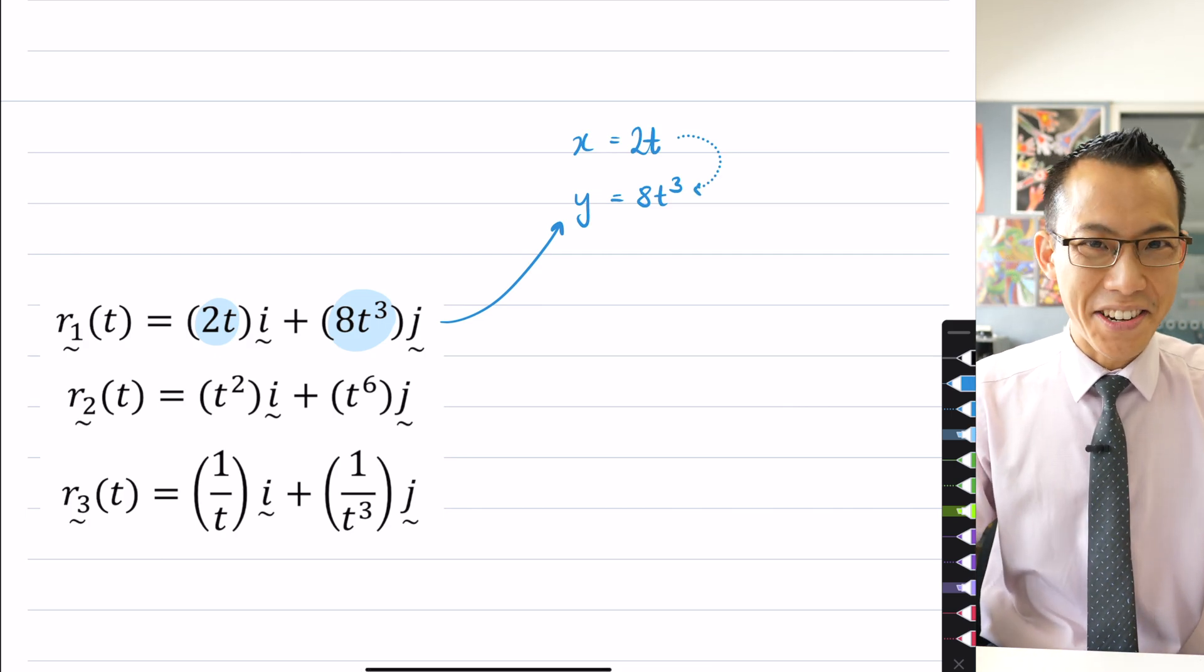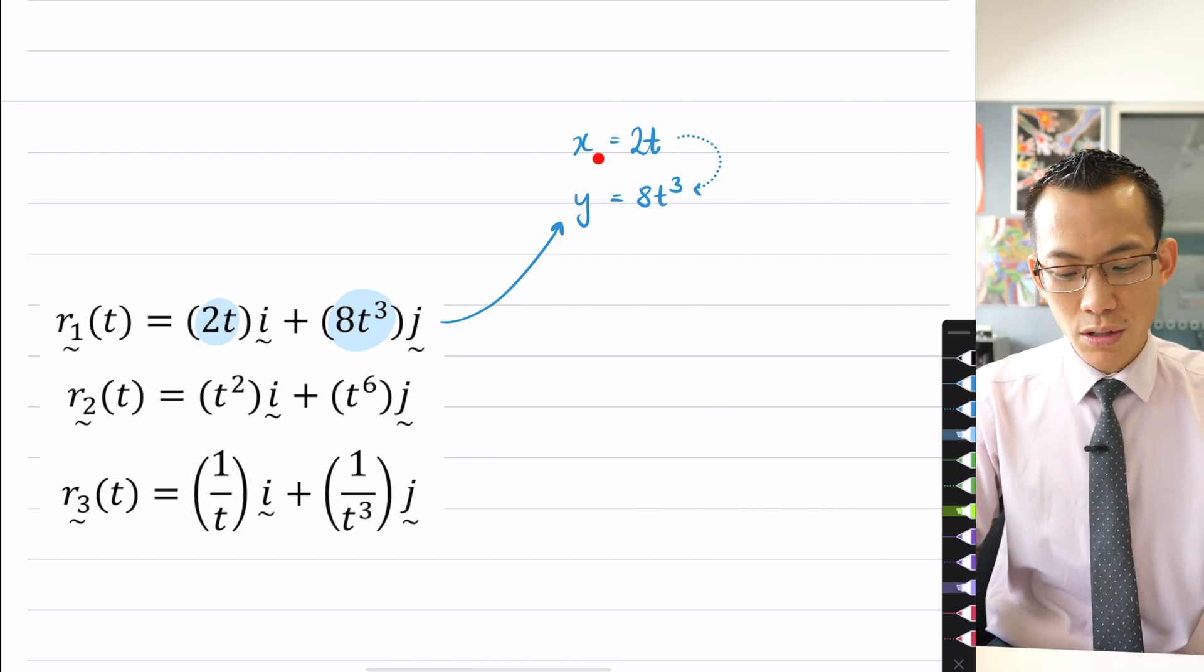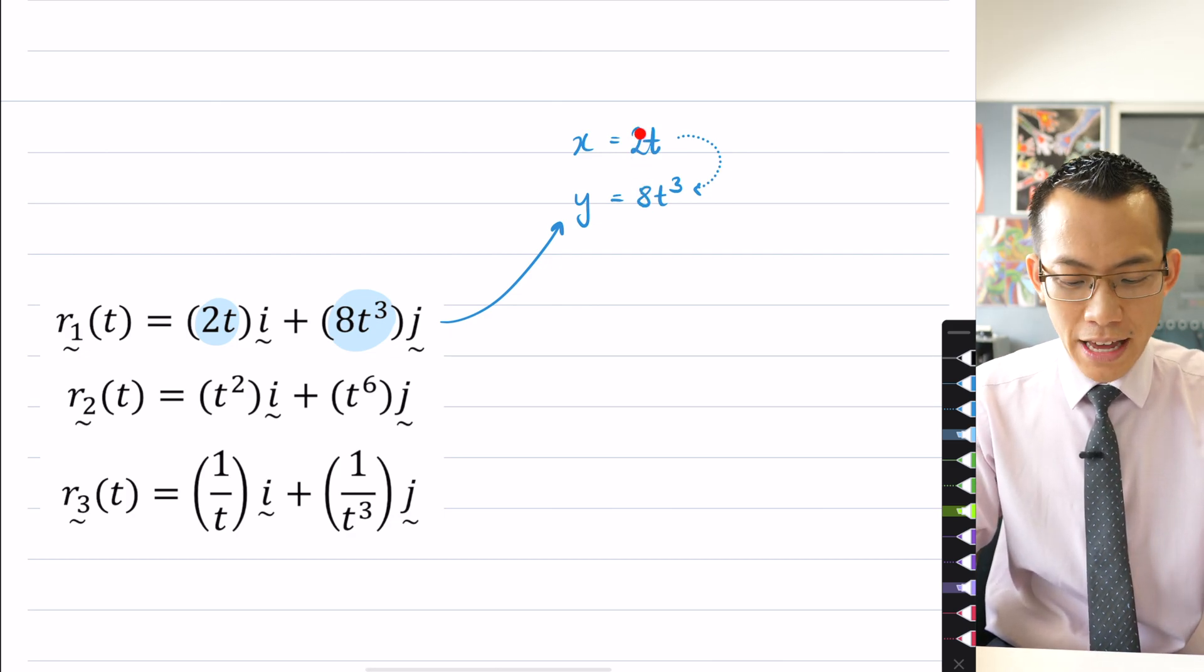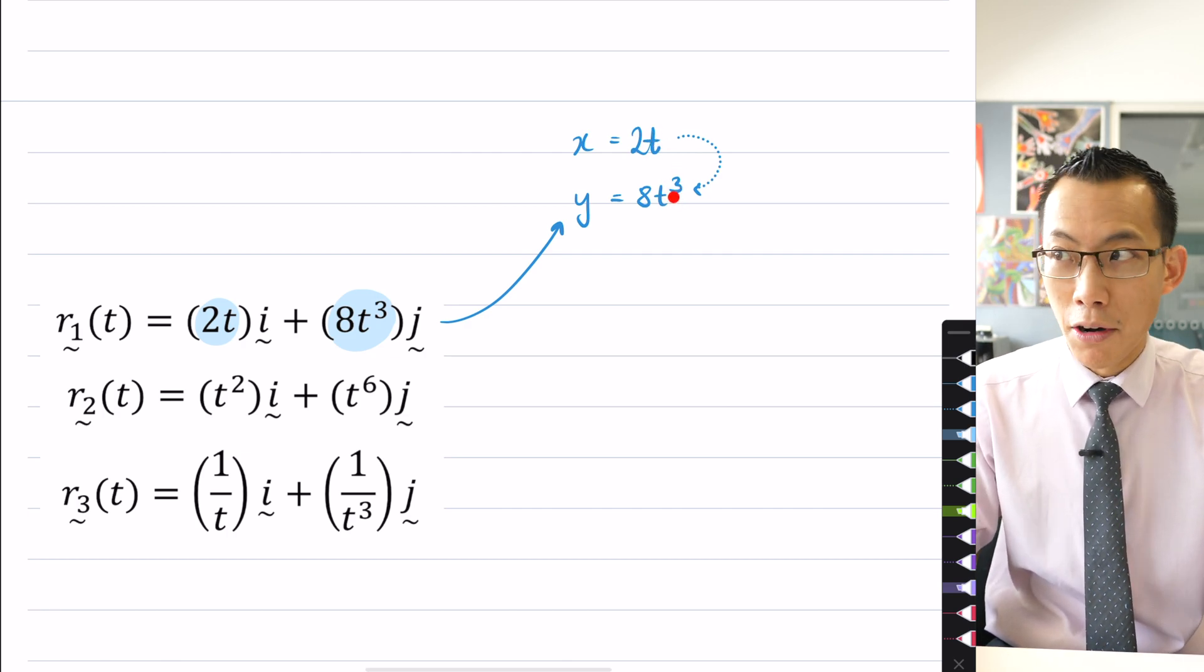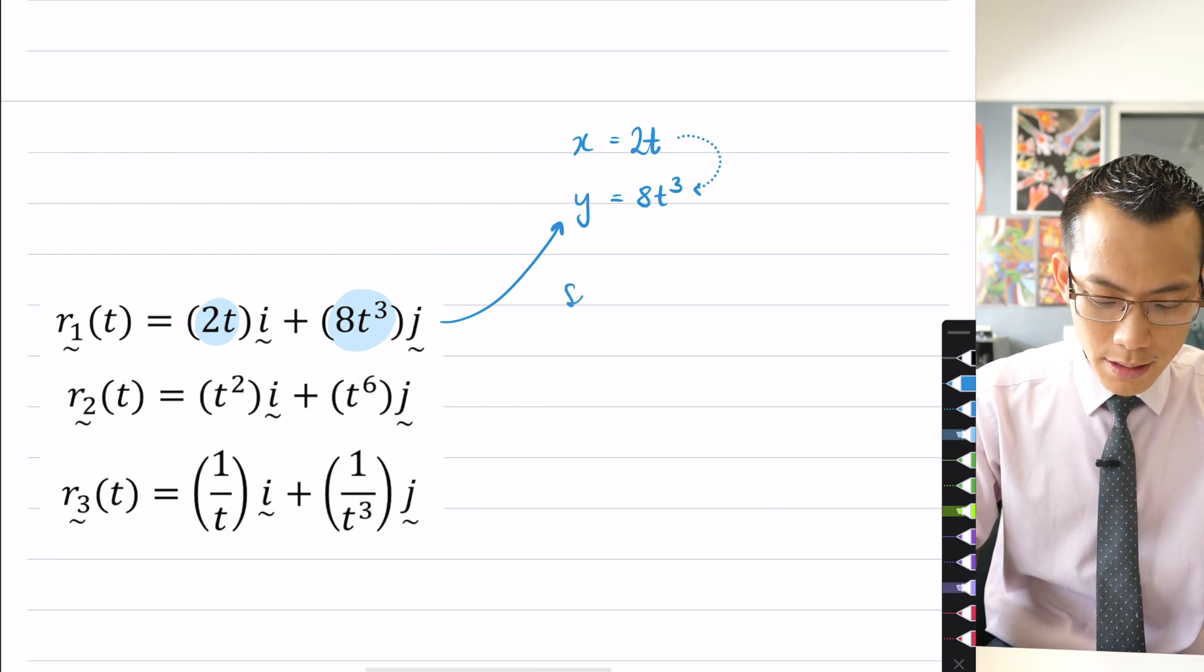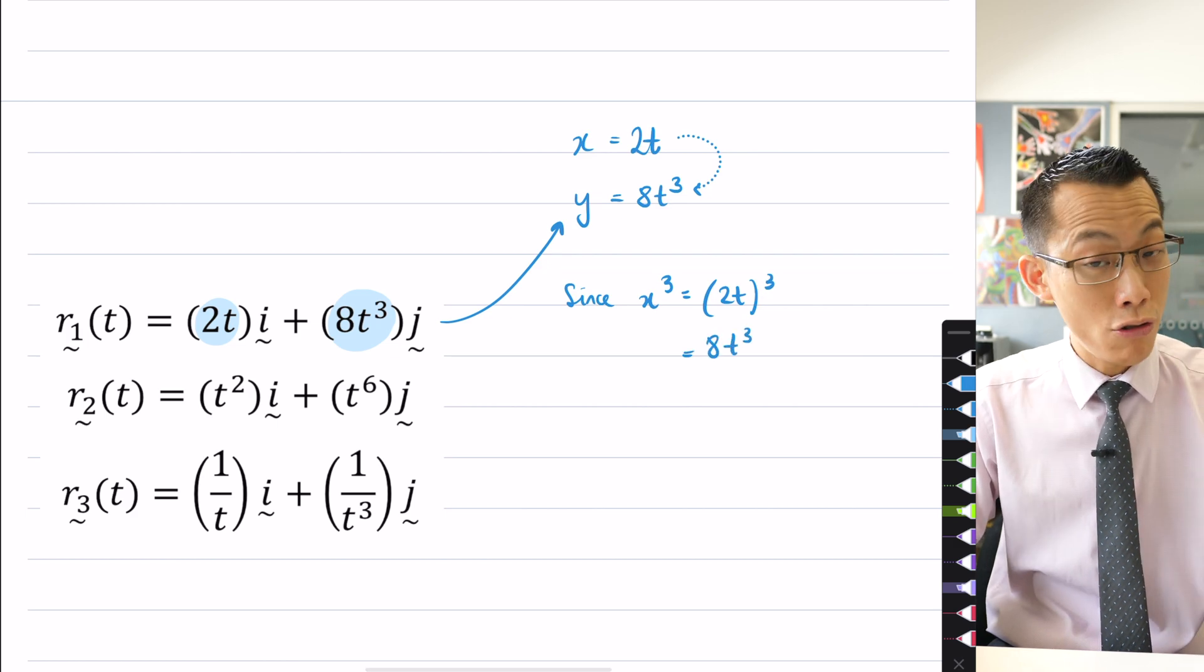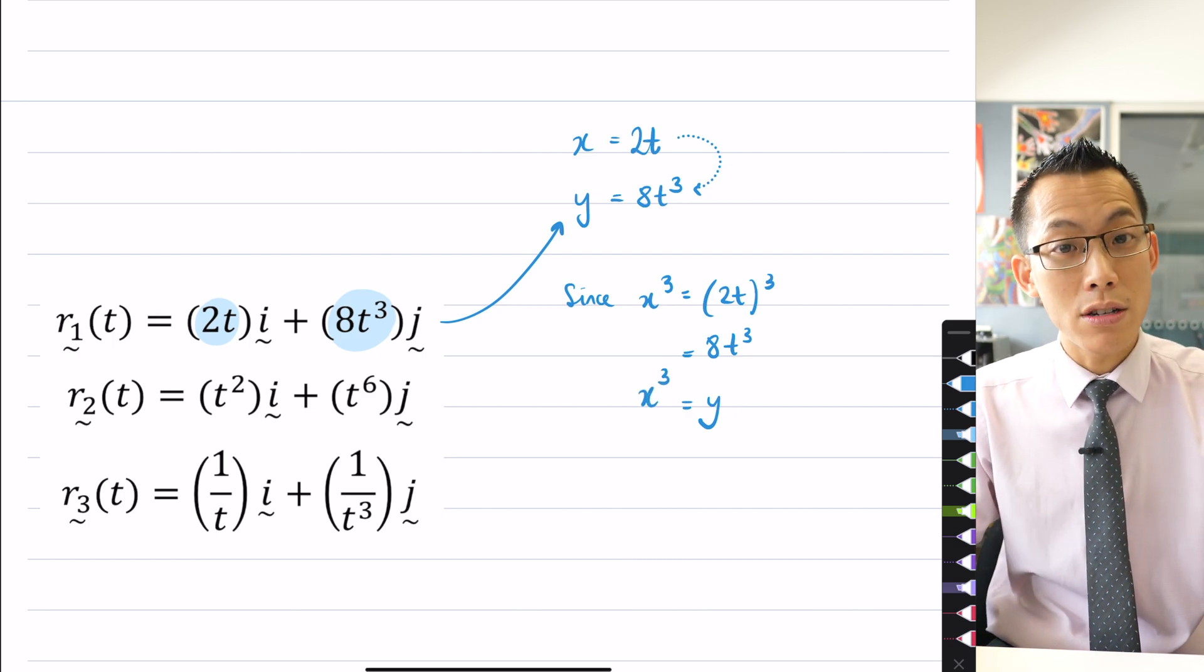So what I want is a relationship between x and y. You've been given a fairly simple parametric equation here, so maybe you can see what you're going to do to x in order to turn it into y. Well, 2 turning into 8, I'm multiplying by 4, but that wouldn't carry along with the t. t turning into t³, I'm multiplying it by itself three times. So since x³ equals (2t)³, which is 8t³, which is the thing I'm looking for, that's y.